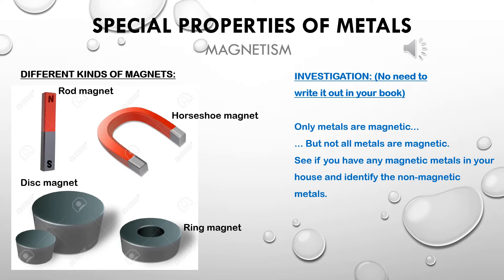If you have a magnet at home, now is a great chance to go around and touch all different types of metals and experiment, because we're going to look at what types of metals are magnetic. If you don't have a magnet at home, that's okay — when we get back to school we will experiment with a few metals.